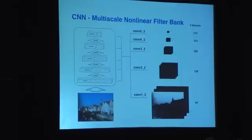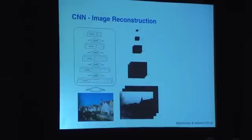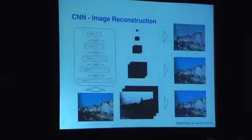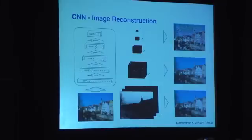We can visualize the information that is preserved in the feature maps in a particular layer of the network by finding a new input image that produces the same feature response in that layer. If we do that in the lower layers, we sort of get back to the original image, whereas in the higher layers, much of the information about the detail pixel values is lost, but the information about the content of the scenery and objects in the scene is still preserved. There is actually a CVPR paper from this year about that by Andrea Bedaldi's group that goes into more detail.